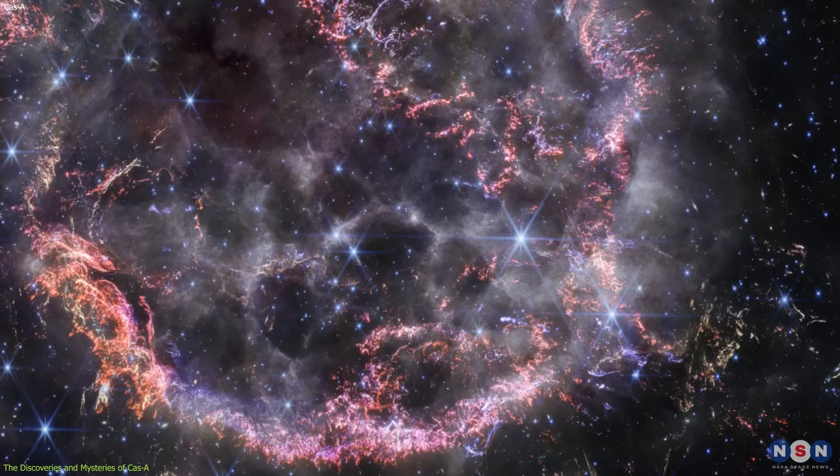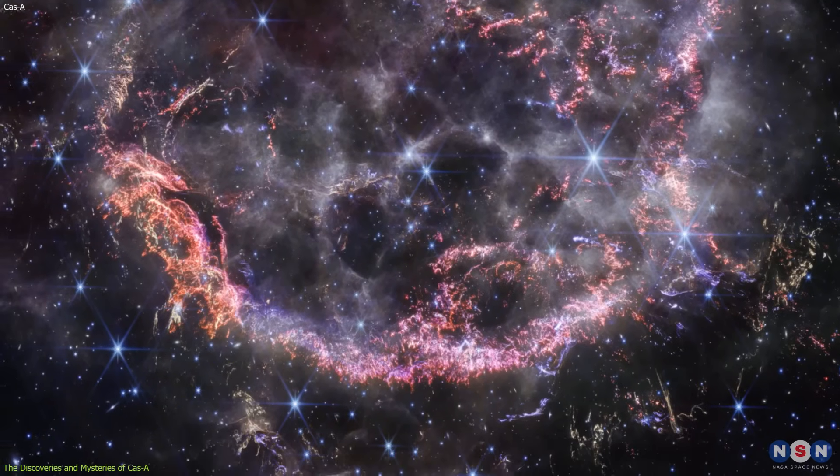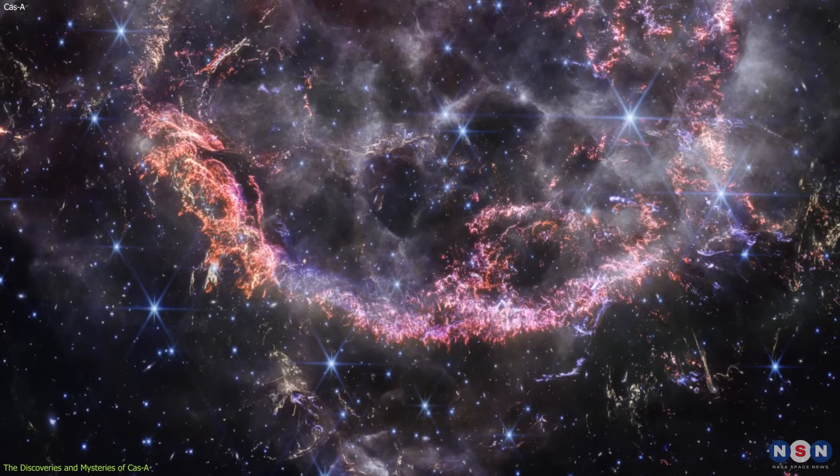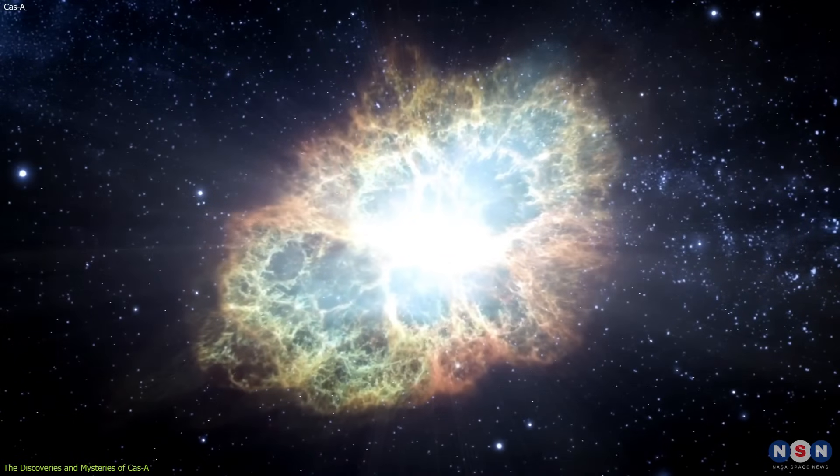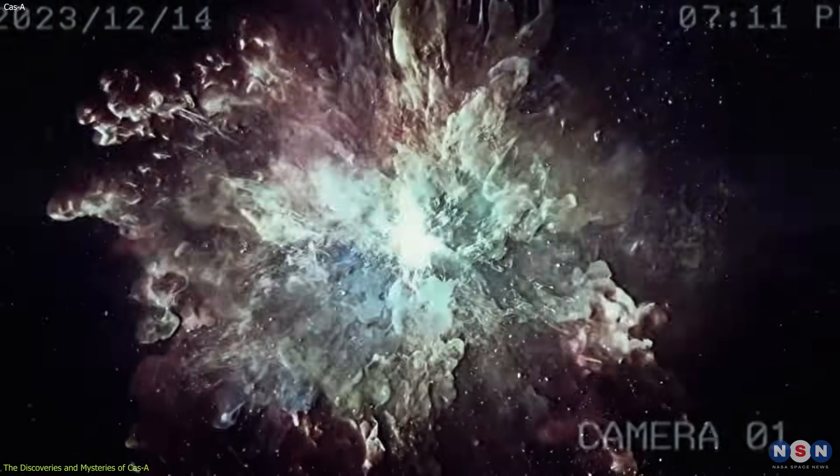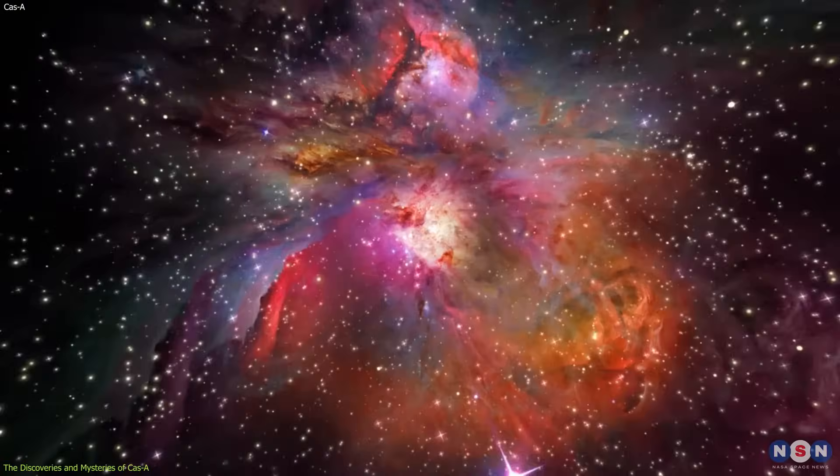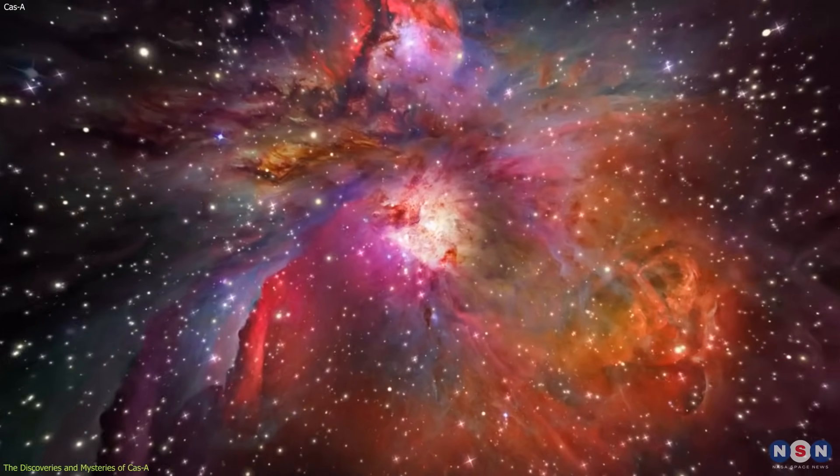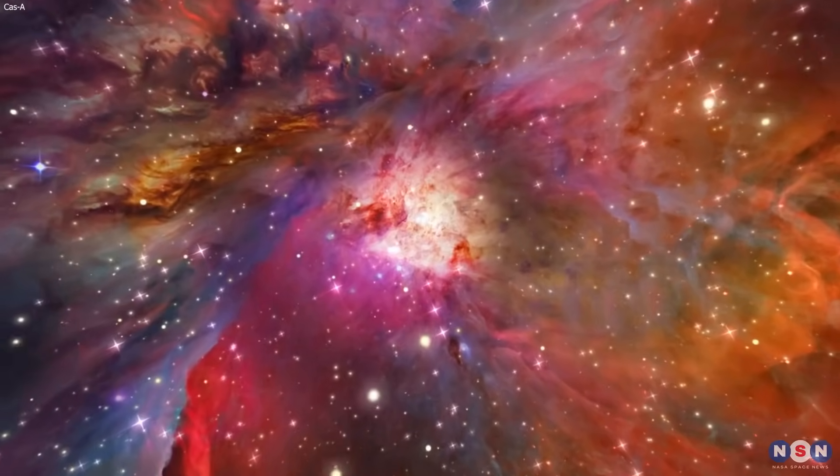The image also shows us that Cass A is surrounded by other light echoes that are also reflections of the light from the supernova explosion. These light echoes are like snapshots of the history of the supernova, and they can help us reconstruct the timeline and the geometry of the explosion. They can also tell us about the interstellar medium, the space between the stars, and how it interacts with the supernova remnant.